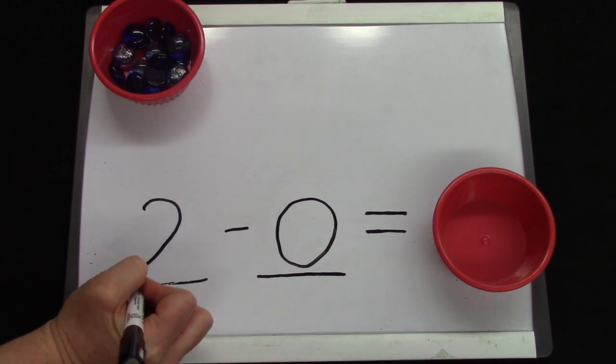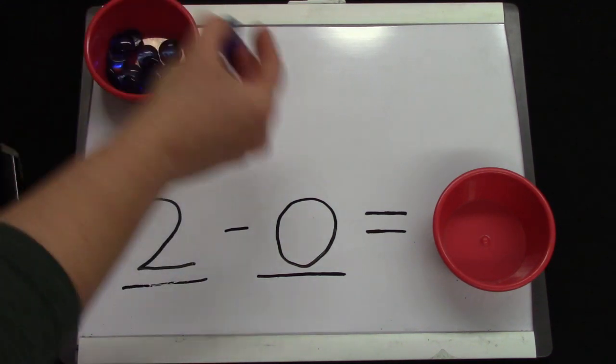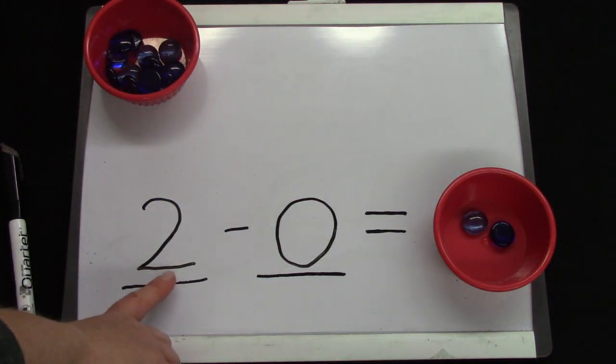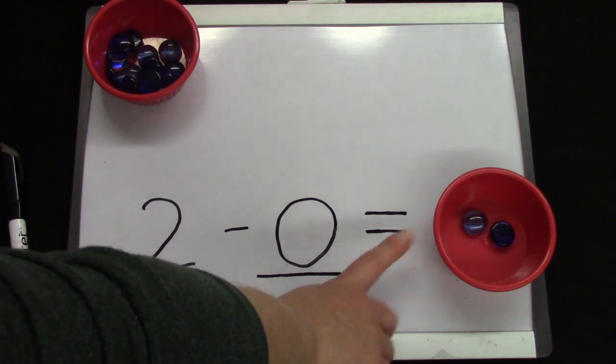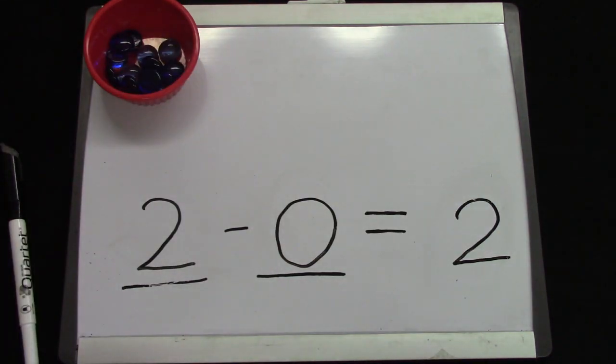For our next question, we're going to start off with two. I am going to get two gems and put them in our cup. Two take away zero equals? How many? Two, because we had two and we didn't take anything away.